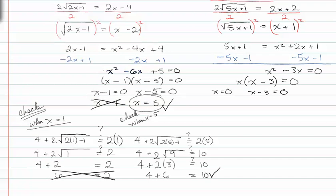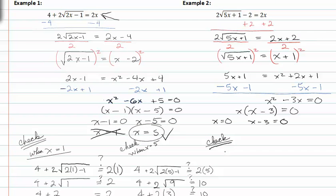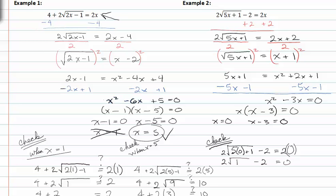When I do this, I need to check my solutions. When x is equal to zero, plugging back into the original equation: two times the square root of five times zero plus one minus two equals two times zero. So I'll get two times the square root of one minus two equals zero, and that indeed is true because two minus two is zero. So this one works, and we can take this solution.